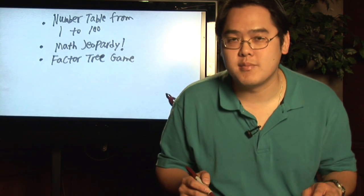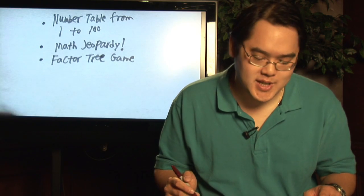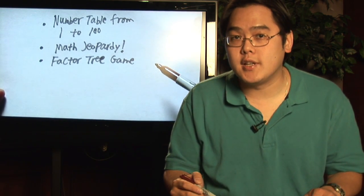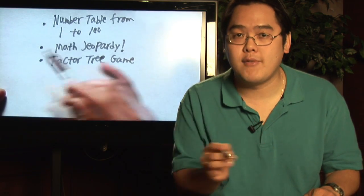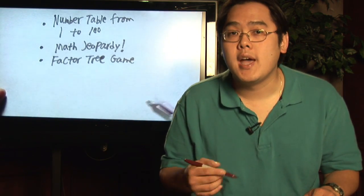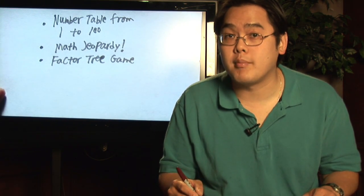Here are some ideas for prime and composite number activities. One basic idea is to use a number table from 1 to 100. List all the numbers from 1 to 100, and then ask students if each number given is prime, composite, or neither.